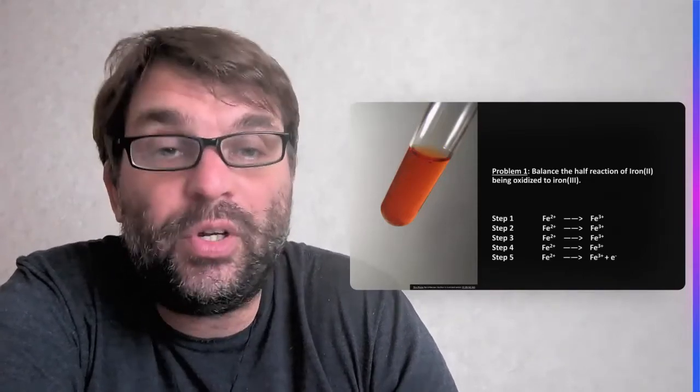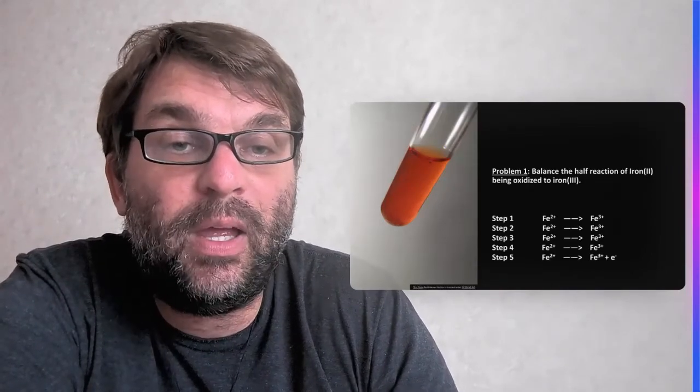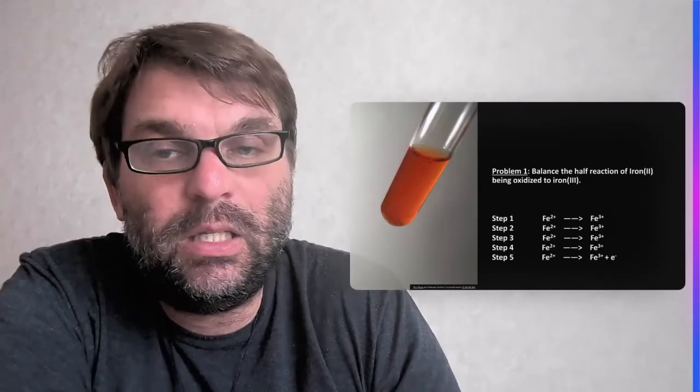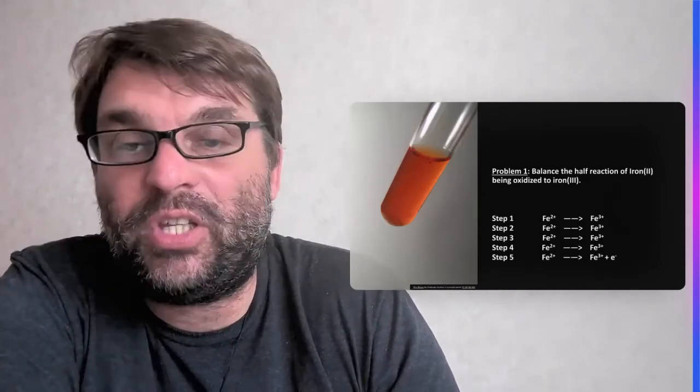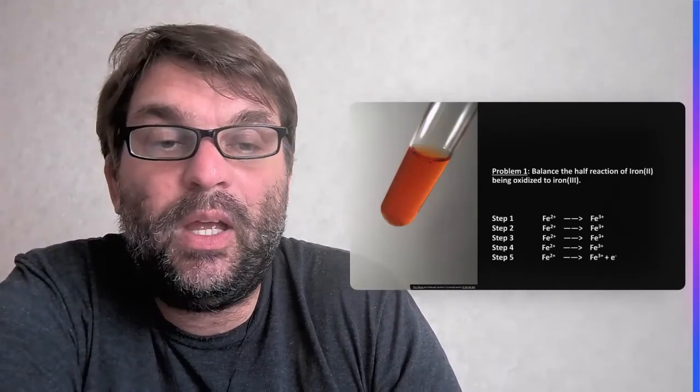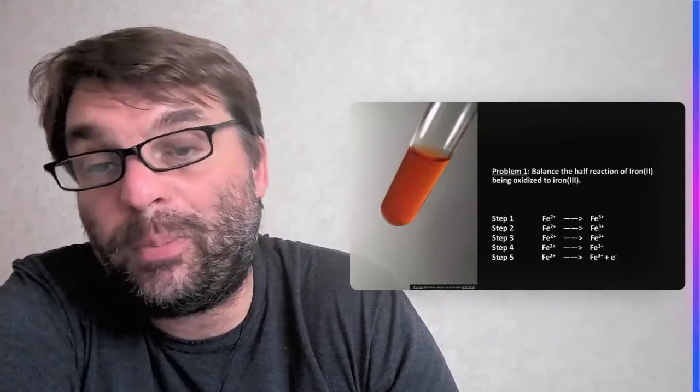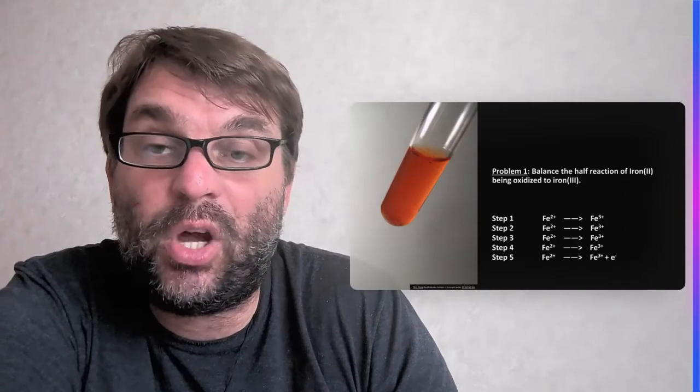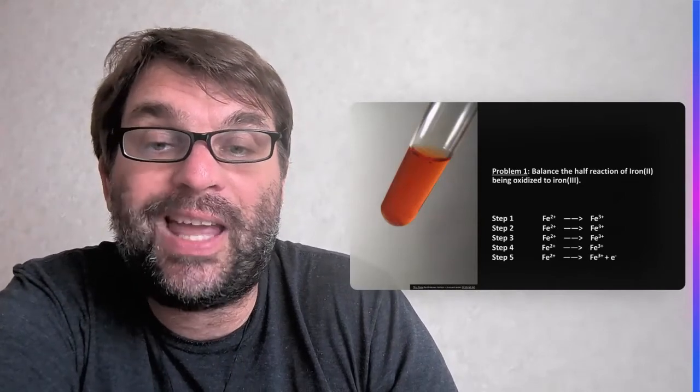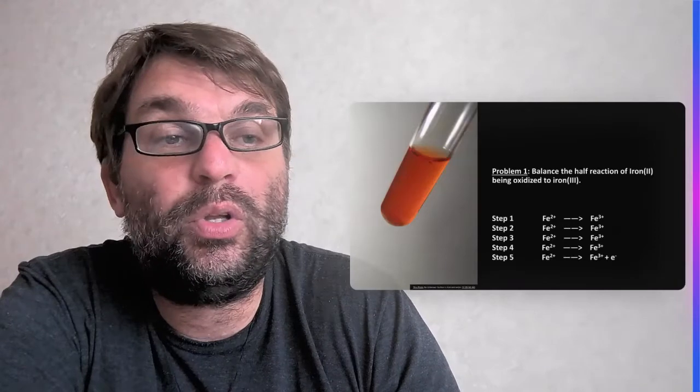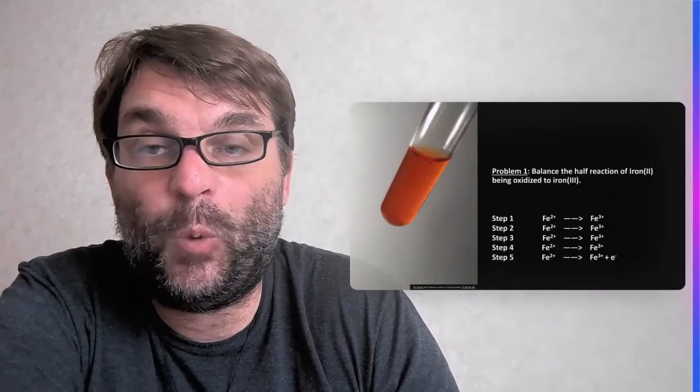There's no oxygen or hydrogen, so you don't have to worry about step three or four. Excellent. And then step five, you're balancing the charge that both sides work out. So on the left-hand side, you have iron 2 plus, so 2 plus is the charge. On the right-hand side, you have iron 3 plus, so you need to add one electron on the right-hand side, so both sides equal 2 plus. Straightforward.